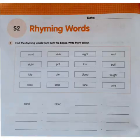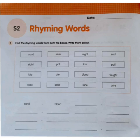For Question 1, find the rhyming words from both boxes, write them below. There are rhyming patterns and rhyming words with different spelling — find them and write them down. One has been done for you: 'send' and 'blend.' For Question 2, write three more rhyming words for each of the following words: wheat, fruit, blue. Find three more rhyming words — you can do it, try it!